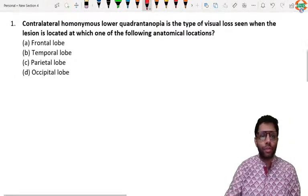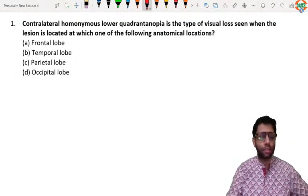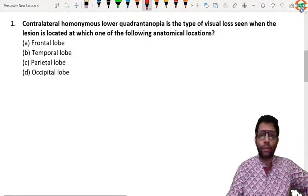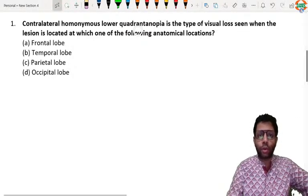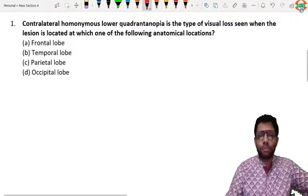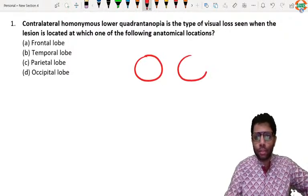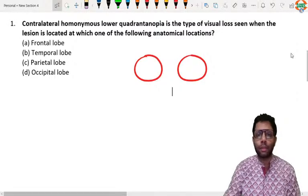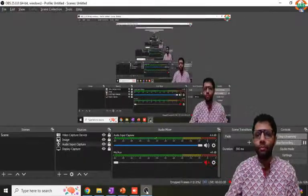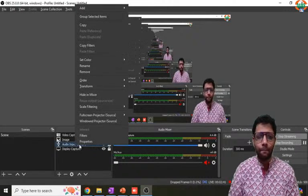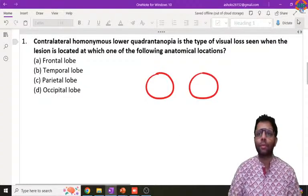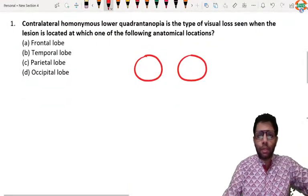The first question was a visual field question and it was asked that if the patient has contralateral homonymous lower quadrantanopia. Anopia means blindness, quadrant means only one quadrant is having problem. And homonymous means, for example if I draw this visual field for you. Always remember the visual field is given as a patient's view. You are the patient, so you are telling the people that this is your right. This is the left visual field.